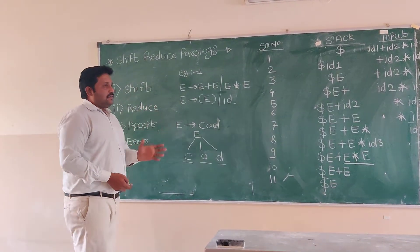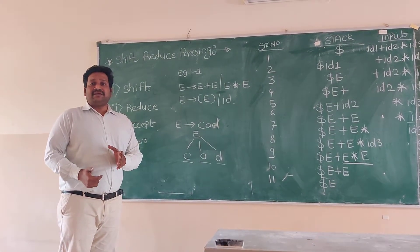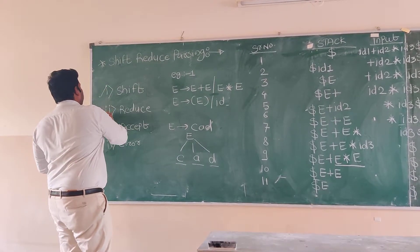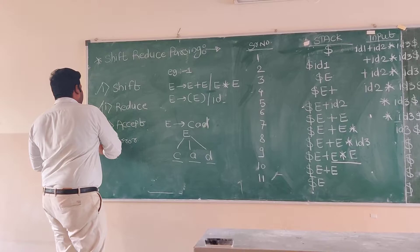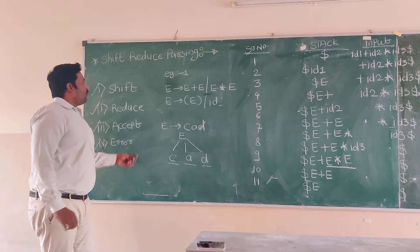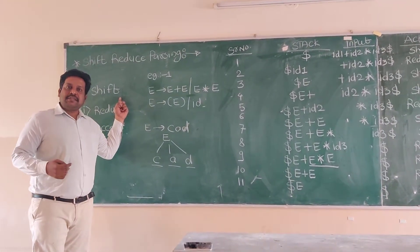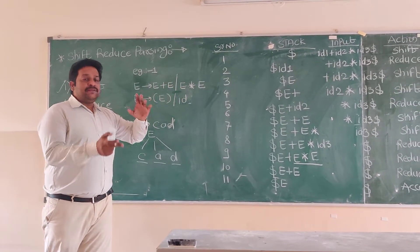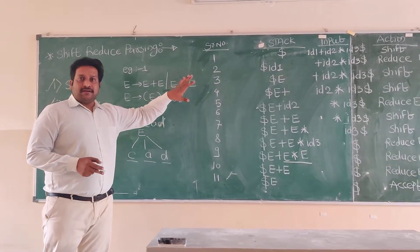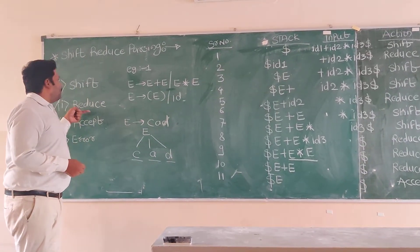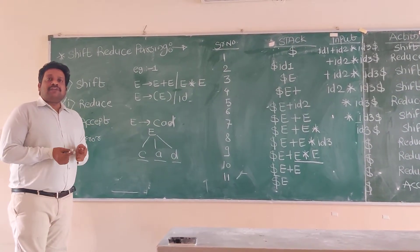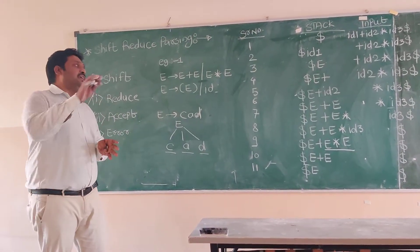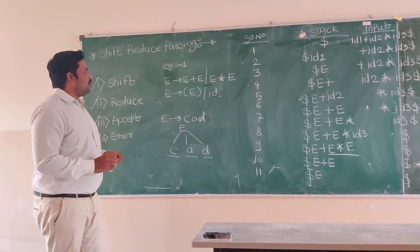There are four functions available in a shift-reduce parser. The first one is shift, the second one is reduce, then accept, and error. What is shift? As the name suggests, it will shift a particular input from the input buffer to the stack. What is reduce? It will do the reduction of your right-side sentential form into the left-side sentential form.